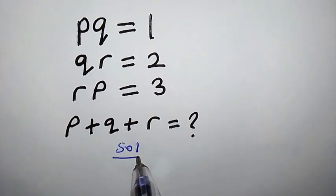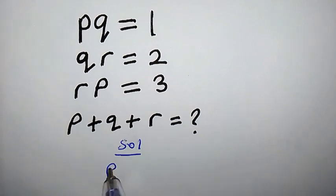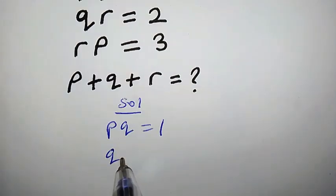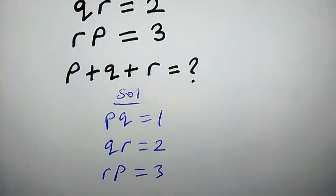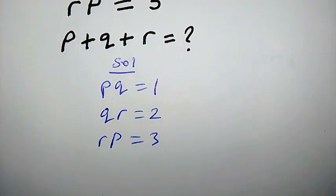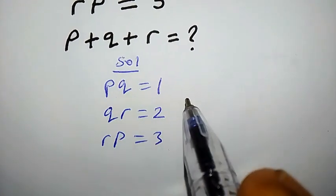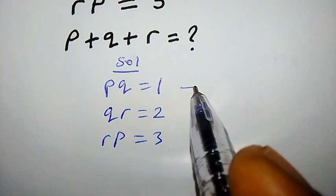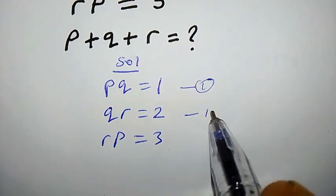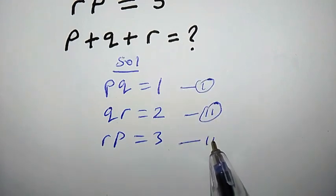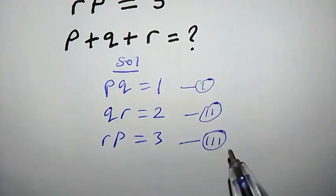Solution. We have PQ equals 1, QR equals 2, and RP equals 3. First, let us label each equation. Let's call this equation 1, this equation 2, and this equation 3.